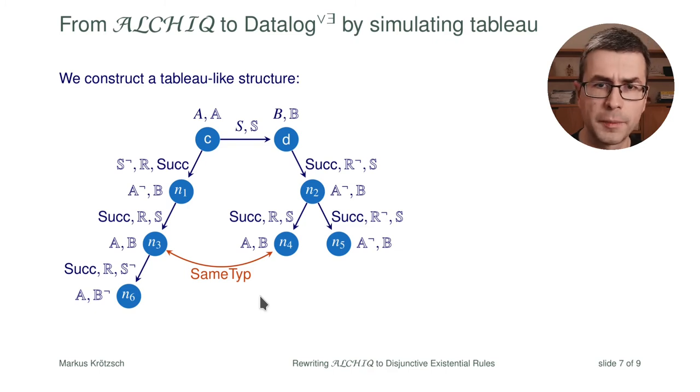We can see with N3 and N4 that they have the same concepts, the same relationships from their predecessors and the same concepts in the predecessors. So we will conclude that they are of the same type for which we have the same tip predicate here. Once they are of the same type essentially we could say one blocks the other. If one has already been expanded we will not expand the other. Unfortunately this cannot be expressed in rules because it's non-monotonic.